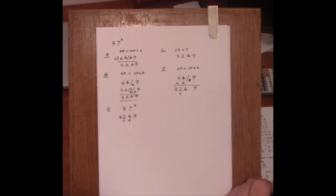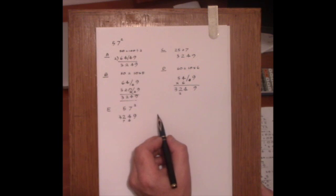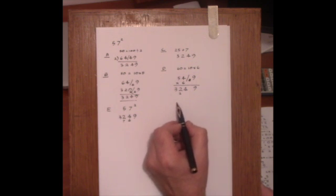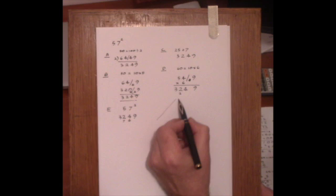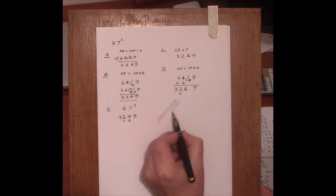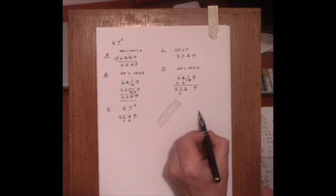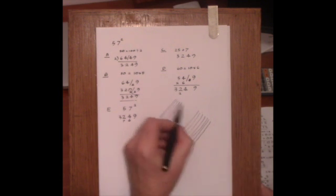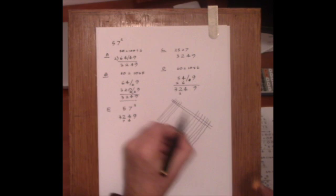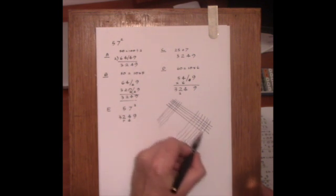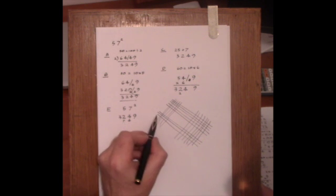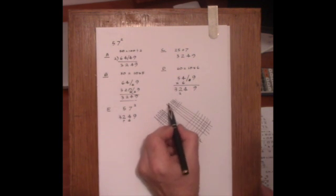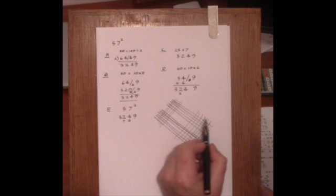And that can be used in all cases. I noticed also recently the Chinese method of multiplying, where you draw like a criss-cross grid of these numbers. So 57 would be represented by 5 lines here. And then 7 lines here. And then another 57 is over here. 5: 1, 2, 3, 4, 5. And a 7: 1, 2, 3, 4, 5, 6, 7.